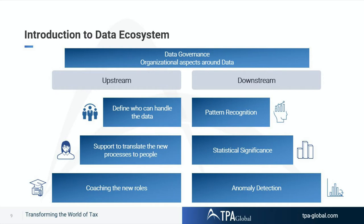The whole upstream is defined: who can handle it, support, and how to translate this new normal to processes but also to people — who's actually going to do what on that end-of-period adjustment. And downstream, on the right side of this slide, you will be looking at pattern recognition, statistical significance, and outlier detection, as we've seen in a very simple version on CPCR.